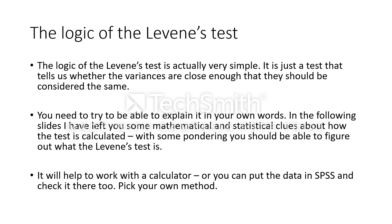So what's the logic of the Levene's test? It's actually quite simple. It's just a test that tells us whether the variances in two or more samples are close enough to each other that they should be considered the same. And if they're close to each other and there's not really much of a difference, and we should consider them to be equivalent, then we have not violated a parametric assumption, and it may be appropriate to continue on to conduct t-tests and various analyses of variance.